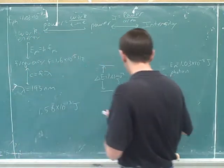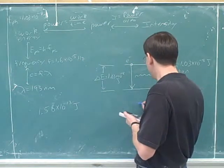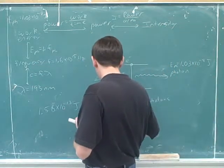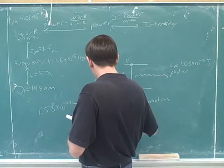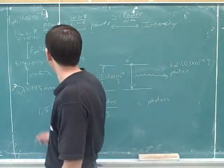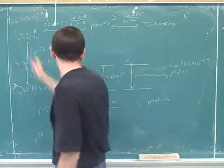So our given unit is joules, but our target unit is photons. We need to get out of joules and into photons, so we need a conversion ratio that cancels the joules and replaces it with photons. Well, that's where we use our part A. In part A, we figured out that one photon has 1.03 times 10 to the negative 18 joules.